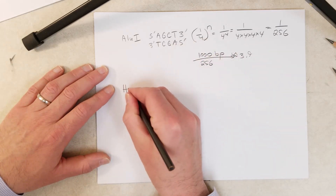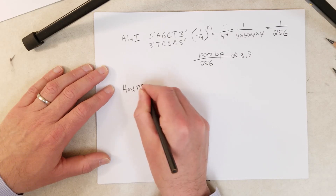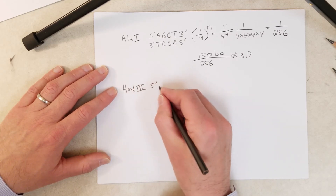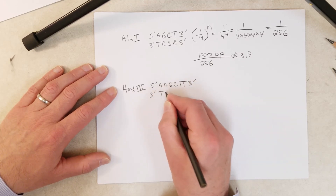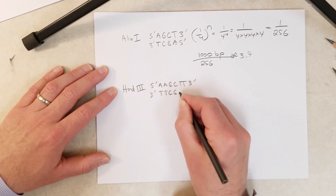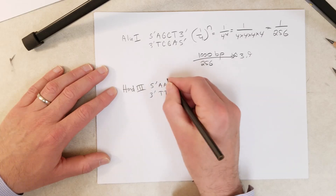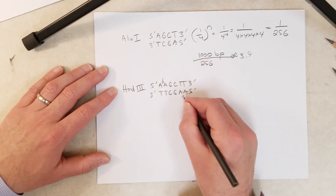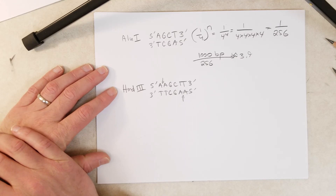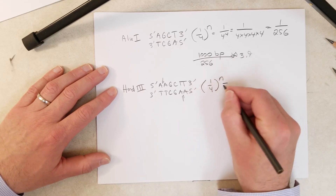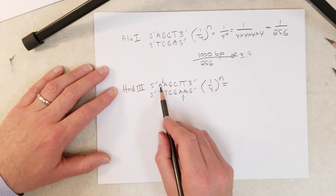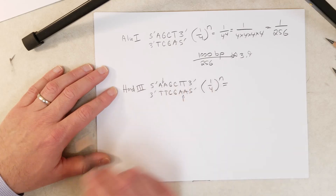Let's look at one more example. We've already looked at HIN-D3, which is a six-base cutter. It cuts the sequence A-A-G-C-T-T. It doesn't really matter where it cuts within the sequence for calculating how often it should cut a DNA molecule of a given length. We plug in the formula where n equals 6 — the number of base pairs in the recognition sequence.